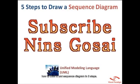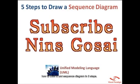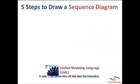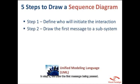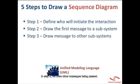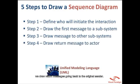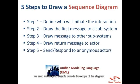This video will show you how to draw a UML sequence diagram in five steps. In step 1, we define who will kickstart the interaction. In step 2, we draw the first message being passed. In step 3, we draw other messages being passed. In step 4, we draw return messages going back to the original sender. And in step 5, we send a message to objects outside the scope of the diagram.